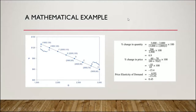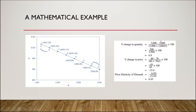Let's take a look at a mathematical example. We want to look at the elasticity between moving from point B to point A on this demand curve — we know it's a demand curve because it's downward sloping, which is the law of demand. First we need the percent change in quantity. The new quantity is 3,000 units and the old quantity is 2,800. So we do 3,000 minus 2,800, divided by the average of the two, times 100, which gives us a percent change in quantity of 6.9 percent.